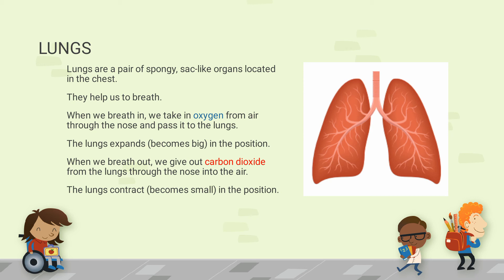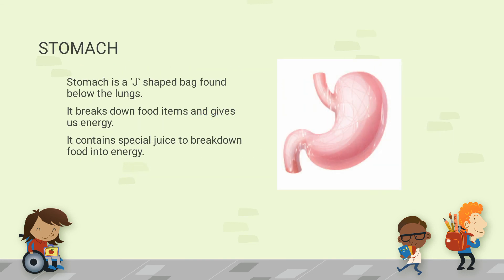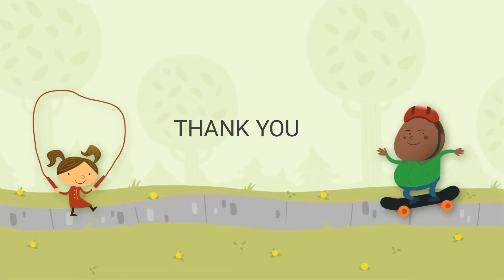When we exhale, we give out carbon dioxide. Next, we are going to see the stomach. The stomach is in the shape of a J and it is a bag-like structure, found below the lungs. When we eat food, it is taken to the stomach where it breaks down and gives energy to do work. It contains special juice — an acid — which mainly contains hydrochloric acid to break down food.